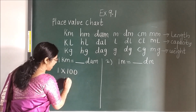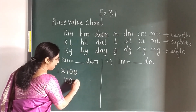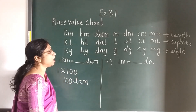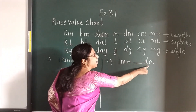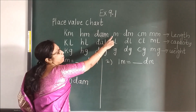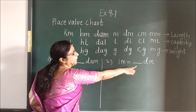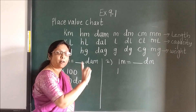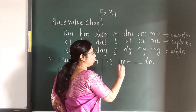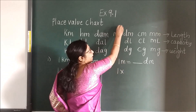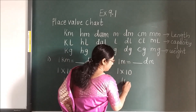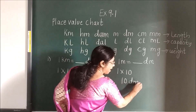Then you multiply this and you will get the answer. Same here: Meter — M and DM. See M. Where is M here? We will write here M. DM — which side are you moving? Right. When you move to the right, what will you do? Multiply. How many times? 1. So 10. So this will be 10 DM.